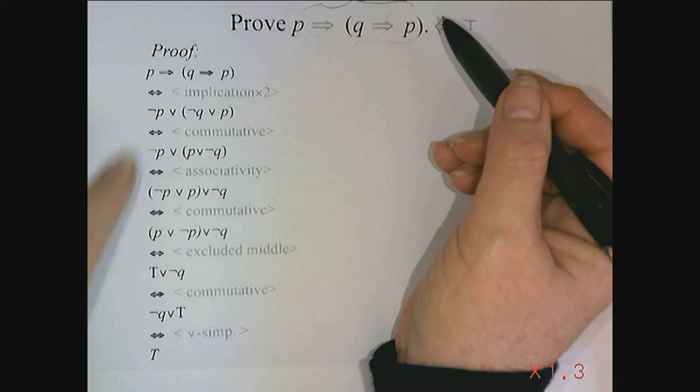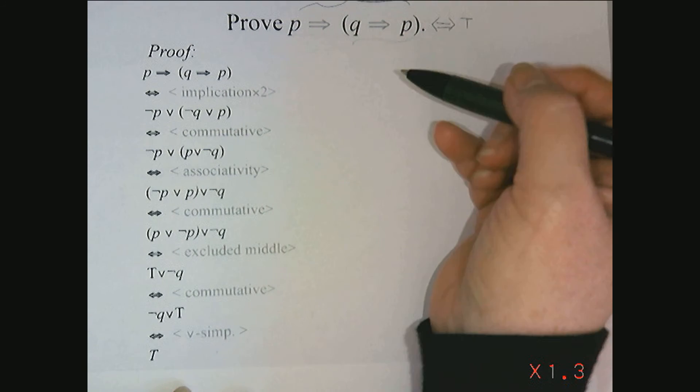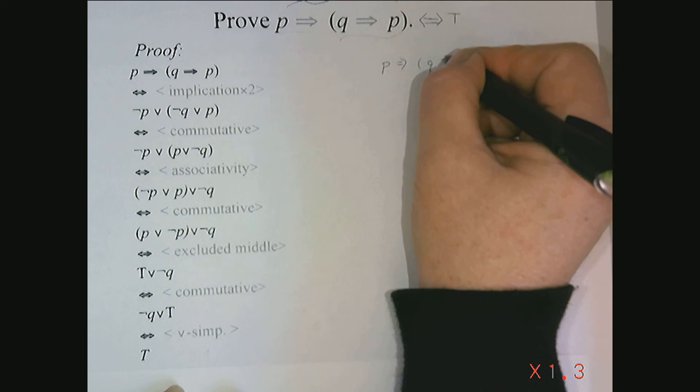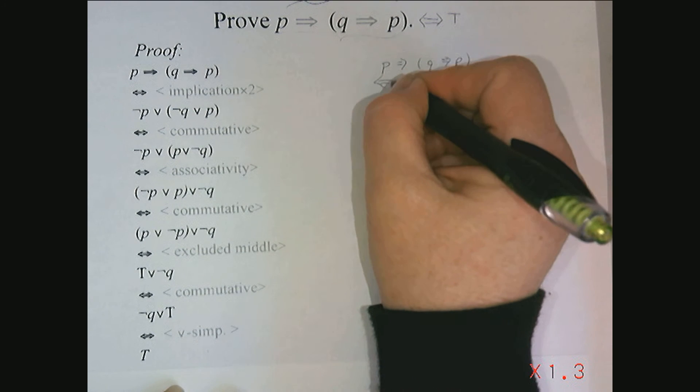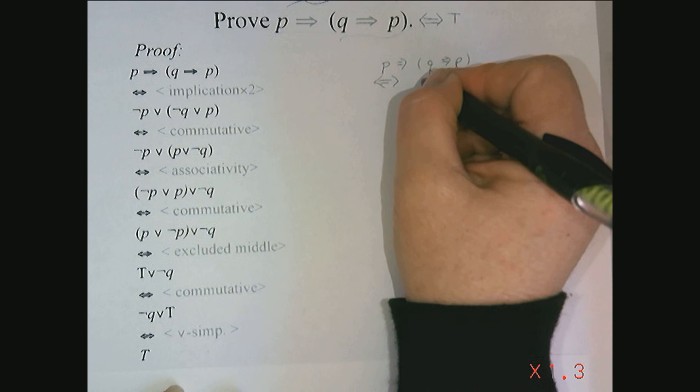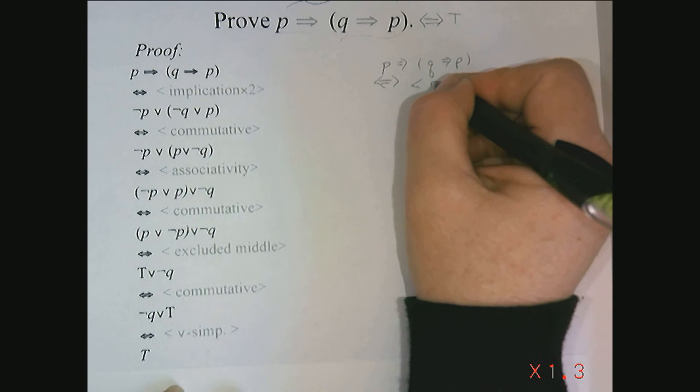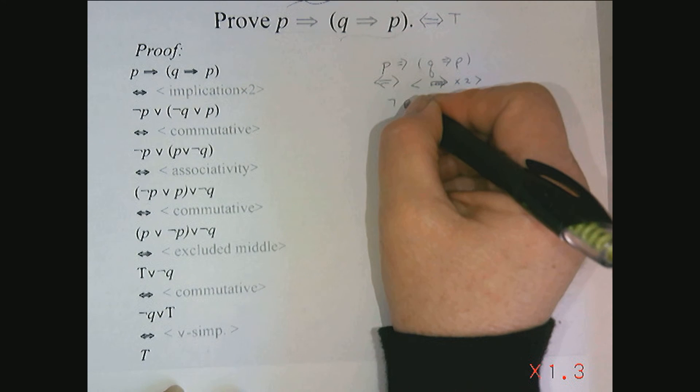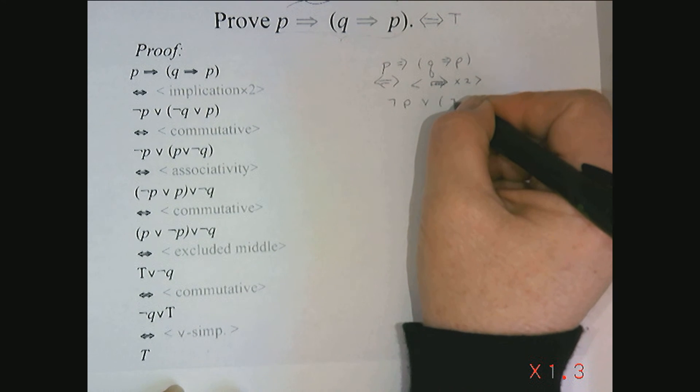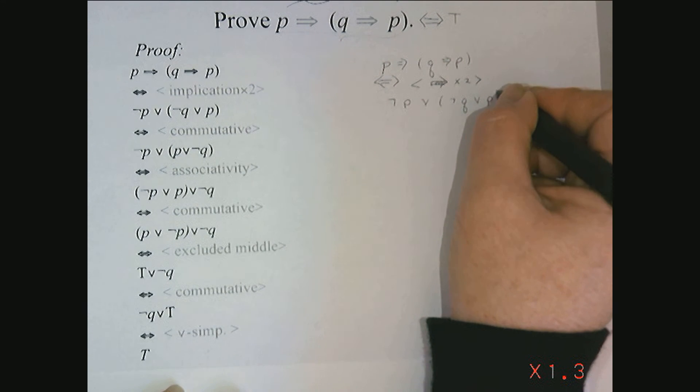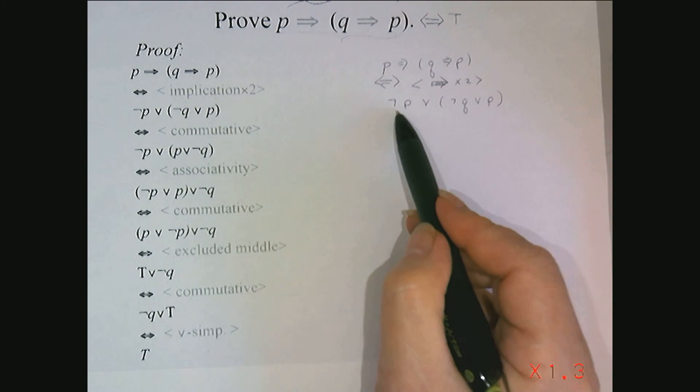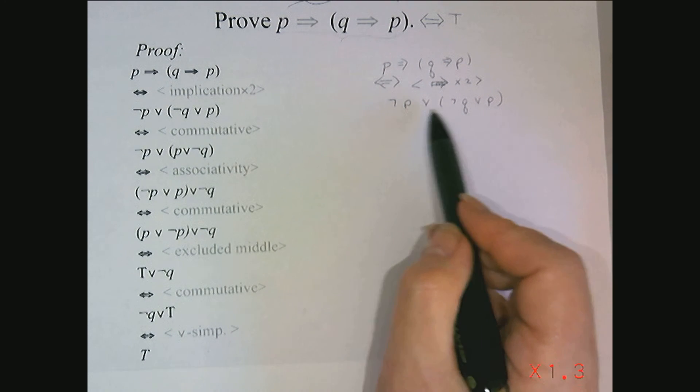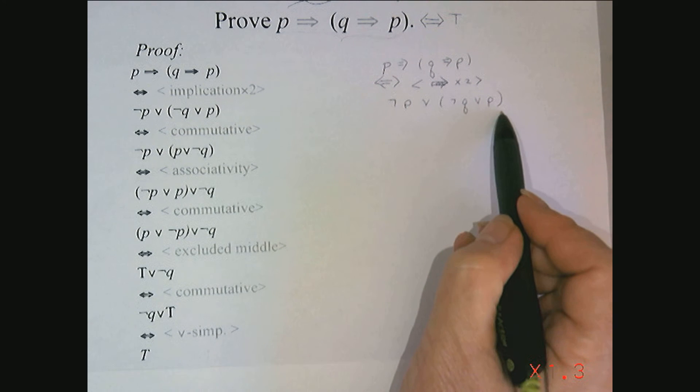So let's try another different arrangement of the proof. If I started off with P implies Q implies P, I could still use implication times two, and then end up with not P or not Q or P. But notice what I'd like to do is to somehow regroup and reorder so that the P and the not P are together. These are together right now.